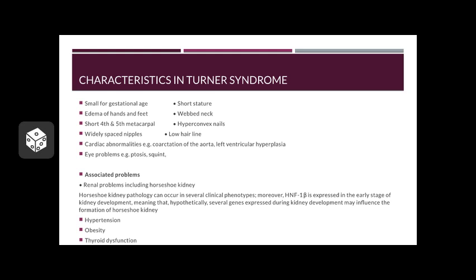Horseshoe kidney is expressed in the early stage of kidney development, meaning that hypothetically several genes expressed during kidney development may influence the formation of a horseshoe kidney that is seen in Turner Syndrome.